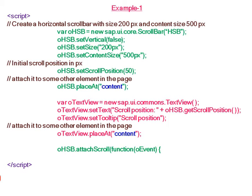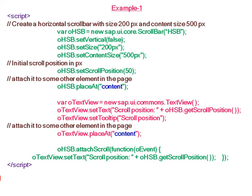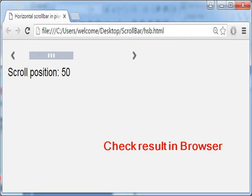In the scroll event handler, we write a function so that when the user moves the scroll bar, the scroll position is dynamically updated and shown. Then we check the result in the browser.